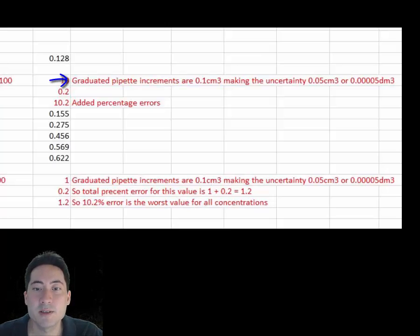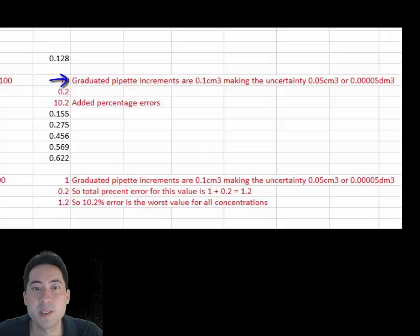The volumetric pipette measures 0.1 cm³ increments, so the uncertainty on the volume is half of this, which is 0.05 cm³. This works out to 0.00005 decimeters cubed.